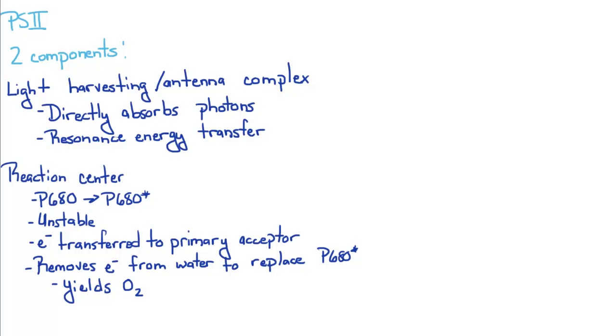Then you've got the reaction center, which has your P680 molecule. So your P680 molecule is going to be oxidized whenever it gives up an electron. This is really unstable. So whenever the electron from your P680 is transferred to a primary acceptor, your P680 star, which is the oxidized form, is going to want to remove an electron from water to replace the P680 star and reduce it back down to P680.